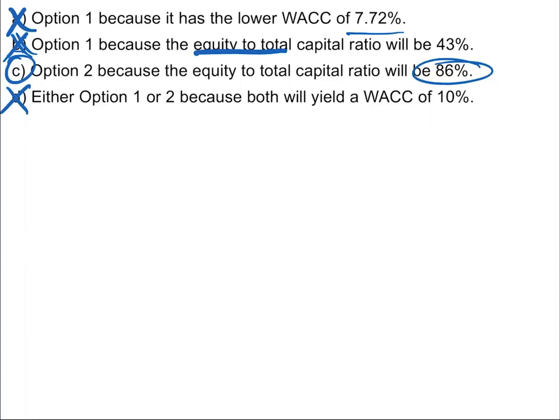This question gives us two criteria: the weighted average cost of capital and the debt to total capital ratio. Just by looking at the costs of debt and equity for both options, we know all WACCs would be less than 10%, so the choice between options comes down to the debt to total capital ratio. The math shows that option two is the only option allowed because it's the only one where total debt stays below the required 50% of total capital. Choice C — option two, because the equity to total capital ratio will be 86% — is the correct answer.